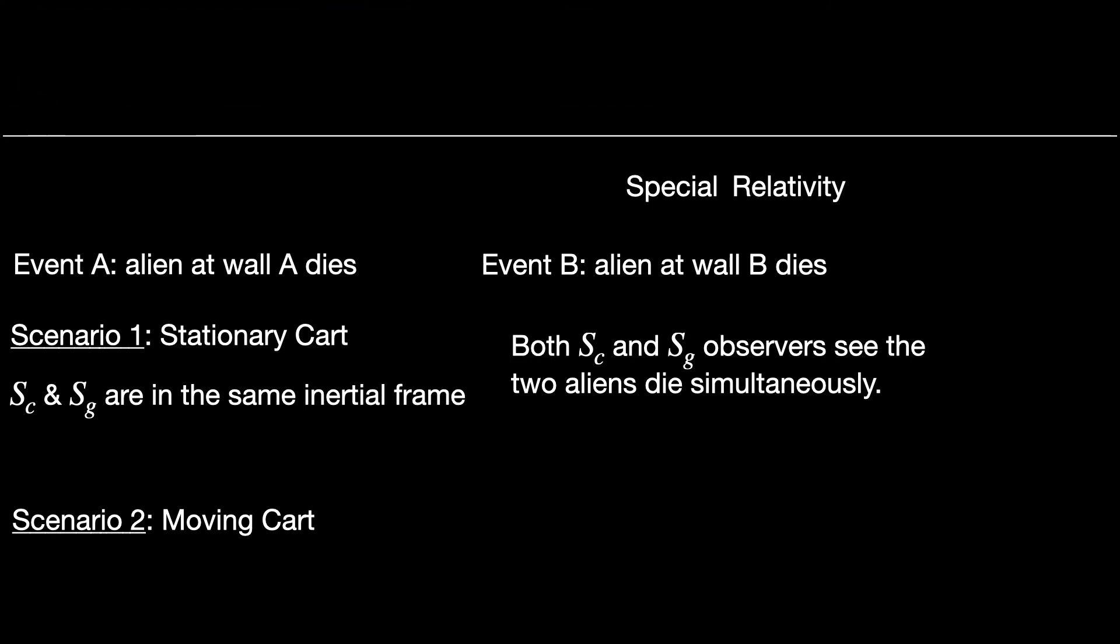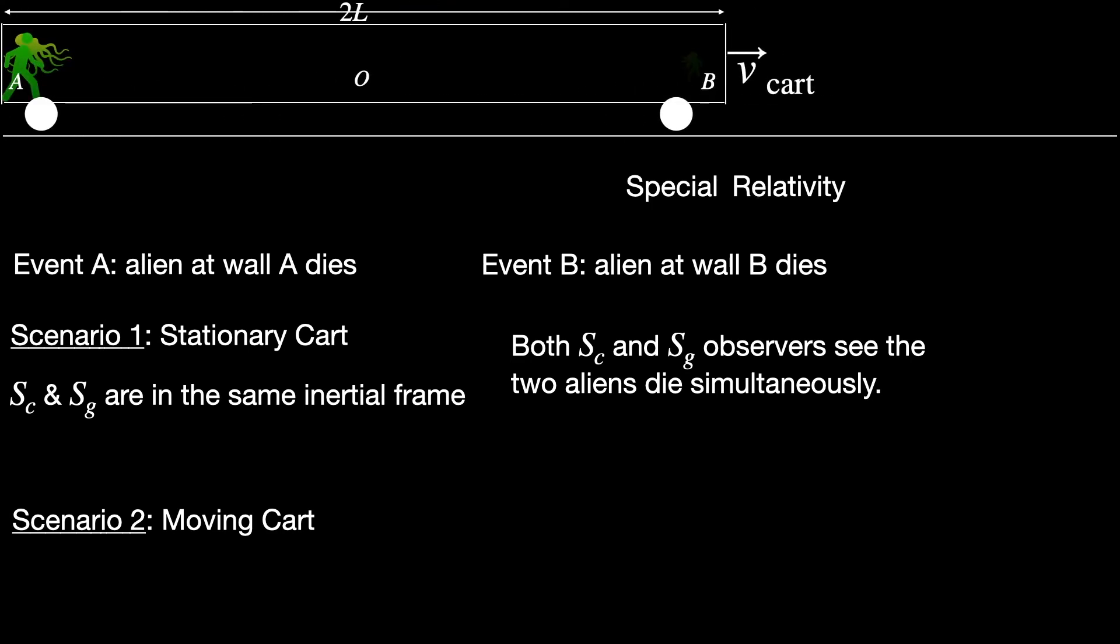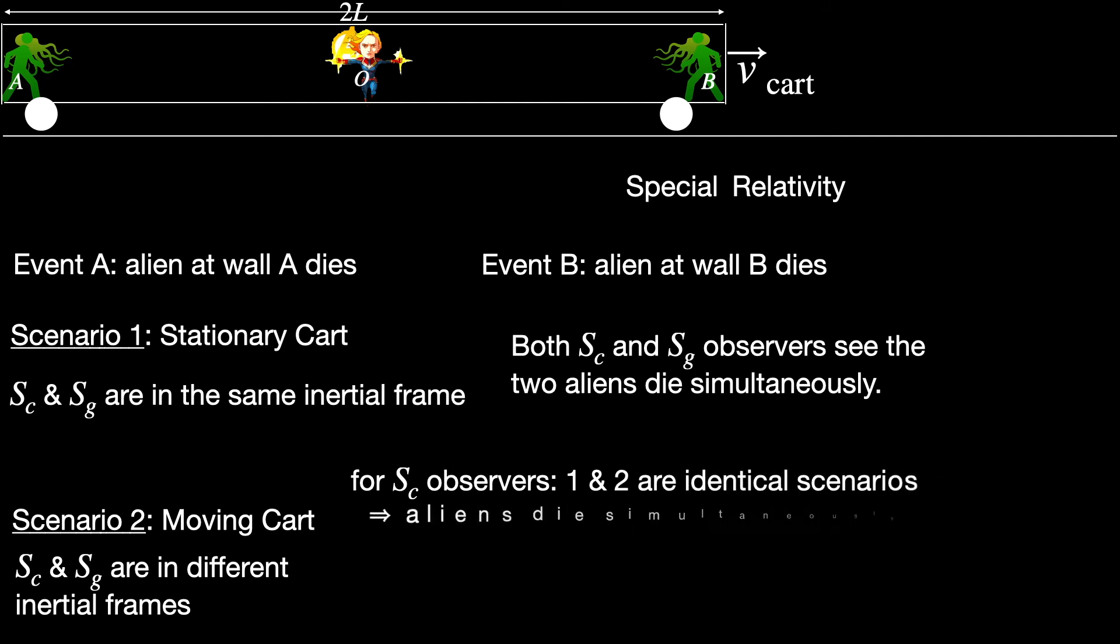Now consider the second scenario. The cart is moving at speed V_cart, this time again to the right. This time the two observer groups are in different inertial frames, so let's see if the observations made by the two groups differ this time. For observers on board the cart, the situation is still the same as scenario 1. They are sitting in the cart looking at the captain shooting her blasters. They will of course see the two aliens die simultaneously.